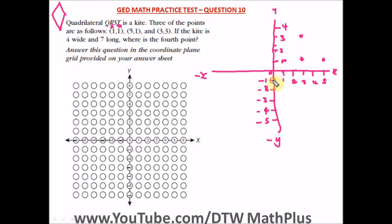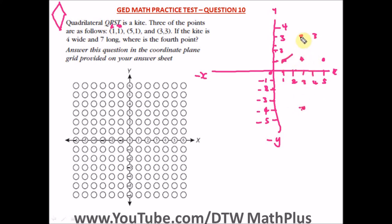Let's count together from y equals three: one, two — this is zero — three, four, five, six, seven. We stop at y equals negative four. So the fourth point is x at three and y at negative four.